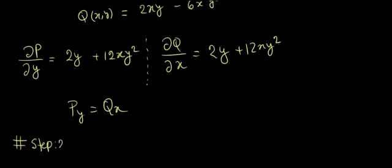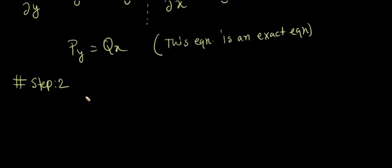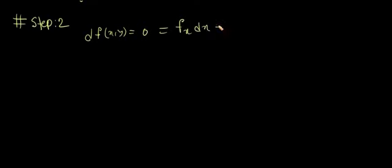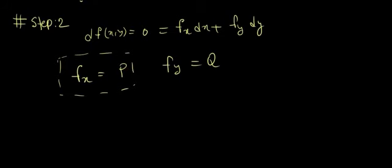Step one is done — the equation is exact. Moving to step 2: if you recall from your theory lectures, for an exact equation you can always find a function f(x,y) such that df = 0, just like the equation itself. Expanding in terms of partial derivatives gives f_x dx + f_y dy = 0, and comparing terms yields f_x = P and f_y = Q. Let's start with f_x = P, as this will help us find the function f(x,y).